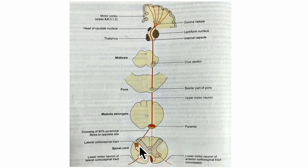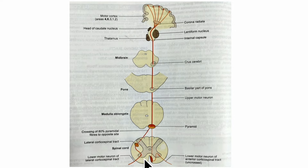The lateral corticospinal tract has reached the lateral column of white matter and the anterior corticospinal tract has reached the anterior column. Both tracts pass through interneurons — also called internuntial neurons — and terminate on the anterior horn cells of the grey matter of the spinal cord.